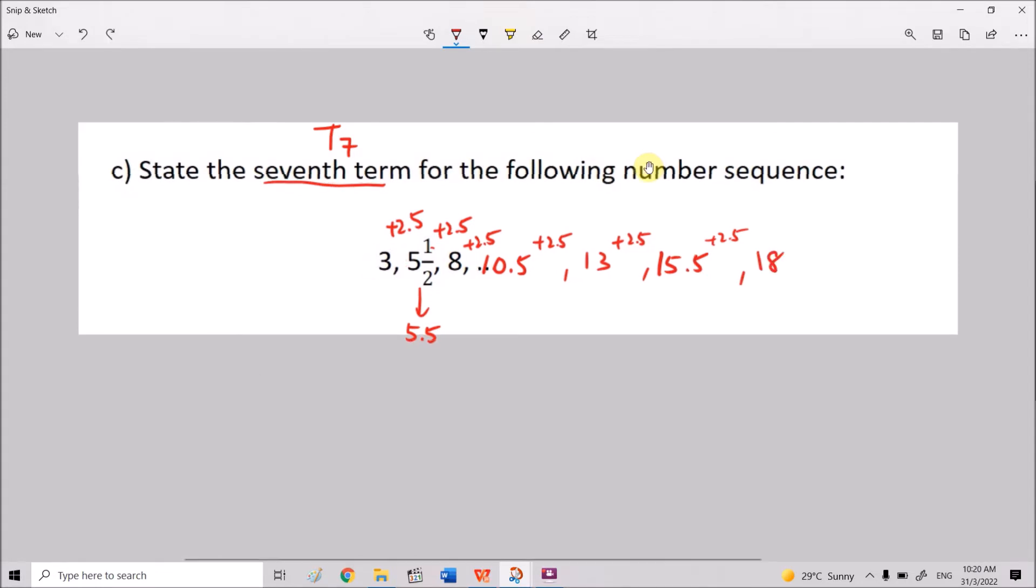So here, 3 is the first term, T1 is 3. T2 is 5 and 1 over 2. T3 is the third term, which is 8. So our answer, we are looking for T7. 1, 2, 3, 4, 5, 6, 7. Hence, T7 is 18.